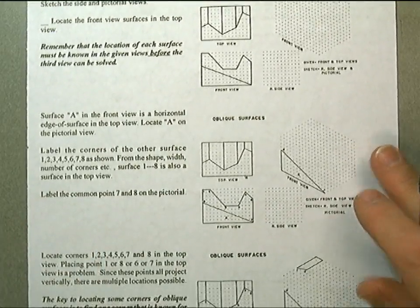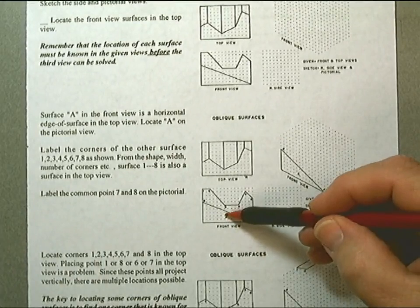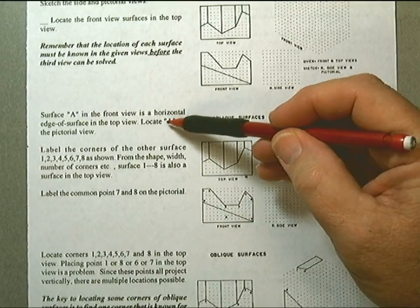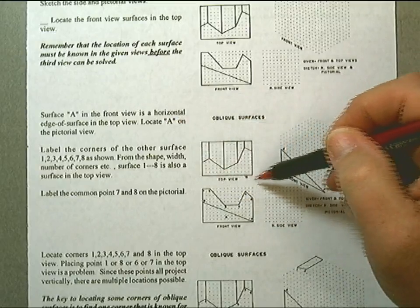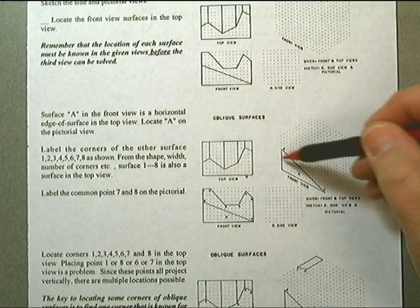Therefore, surface A in the front view is a horizontal edge of surface in the top view. We locate A on the pictorial view like so.